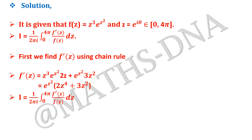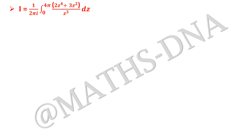Now we find I = (1/2π) ∫₀^(4π) [f'(z)/f(z)] dz. Substituting f'(z) and f(z), we get (1/2π) ∫₀^(4π) [e^(z²)·(2z⁴ + 3z²)] / [z³·e^(z²)] dz. The e^(z²) terms cancel, giving I = (1/2π) ∫₀^(4π) (2z⁴ + 3z²)/z³ dz.